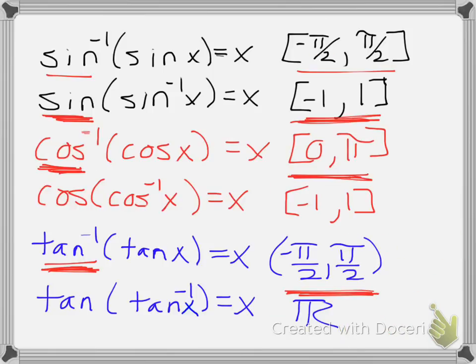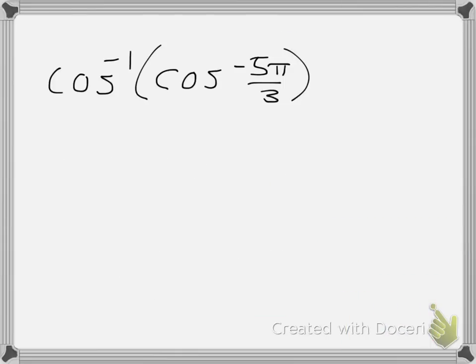Now for cosine, we want to be within the interval from 0 to π. So from 0 to π, or we can think of it as 3.14, so is our value of negative 5π over 3 within that interval? It would be negative 5.23, so clearly it is not.